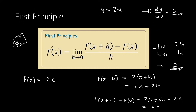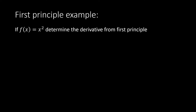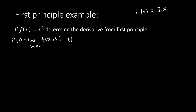Now let's do a proper example. Determine the derivative of f(x) = x² from first principle. We already know the answer is 2x. The first thing to do is write the formula: limit as h approaches 0. Let me do this step by step so you can follow.